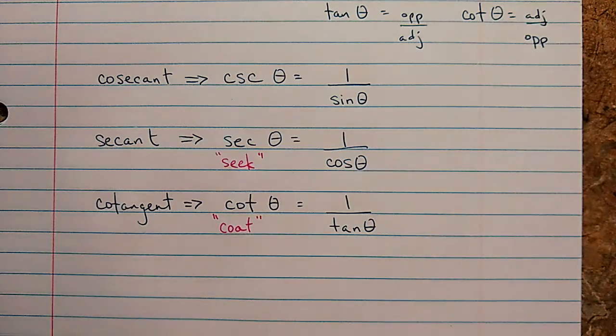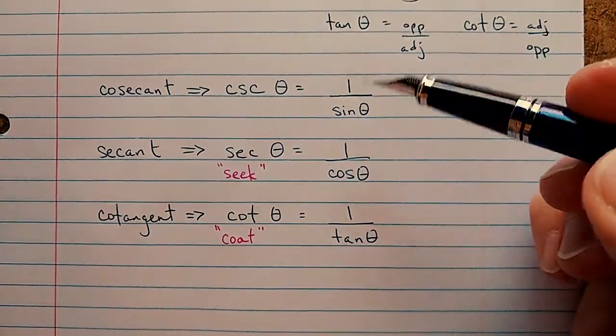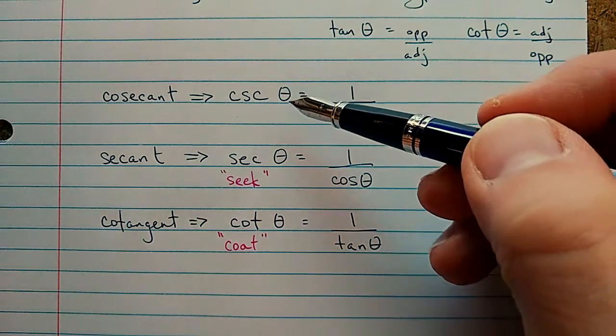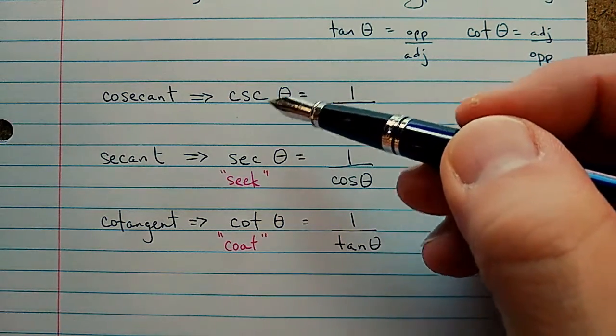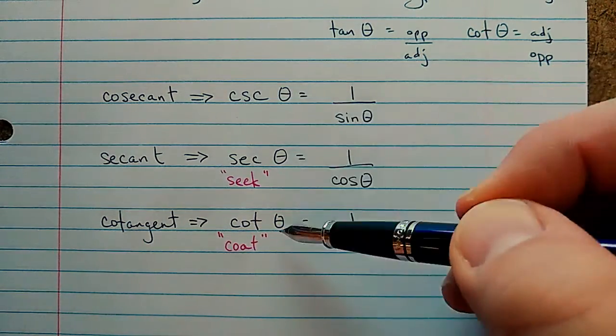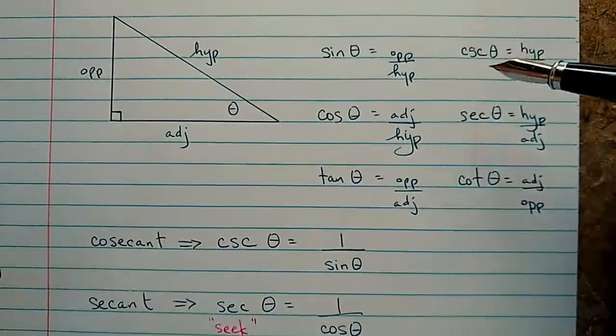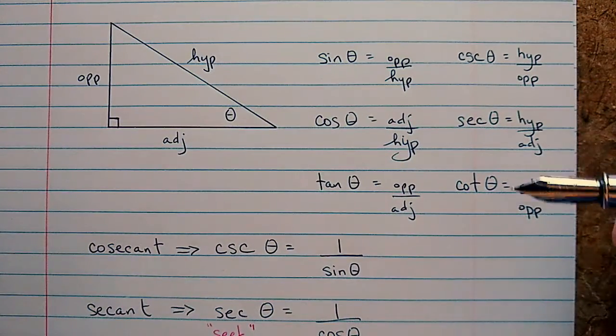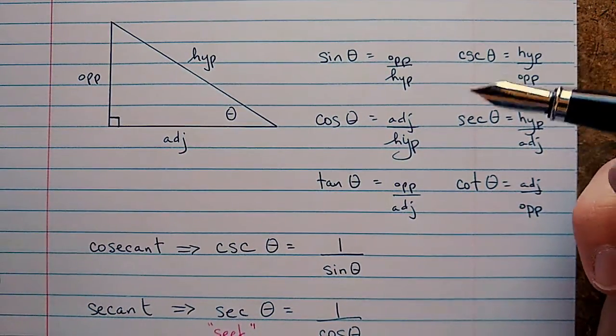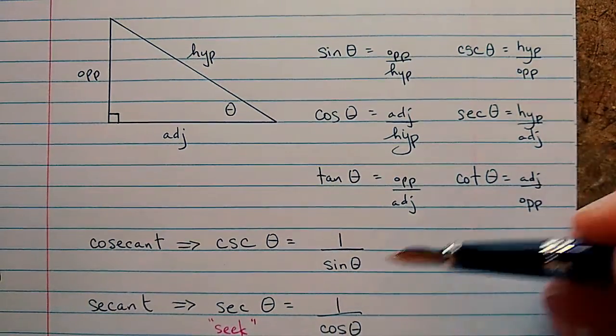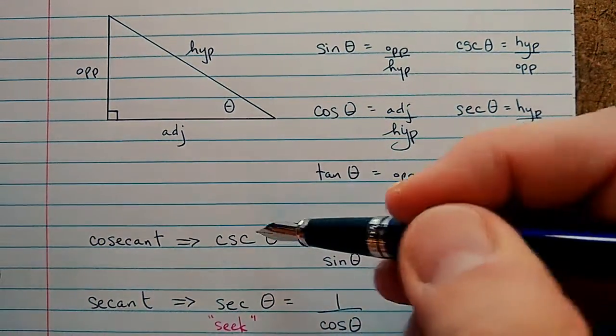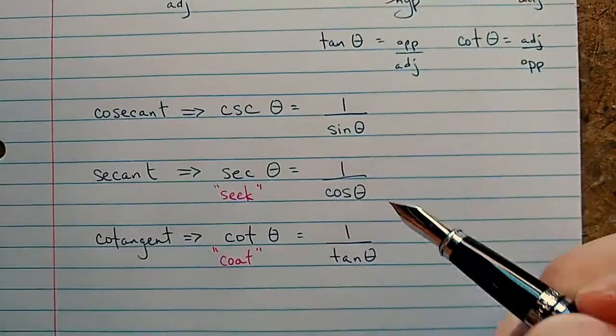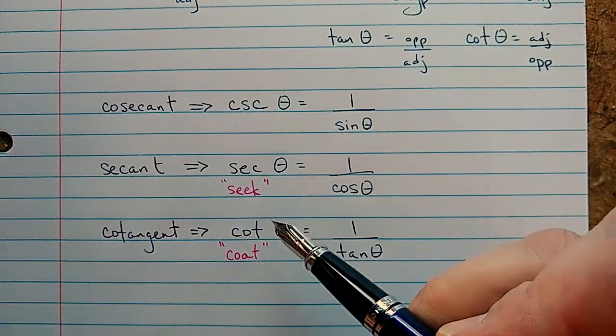So the reason we have these is that for some problems, it's easier to express the problem that we have or the relationships using one of these three ratios instead of one of these three. And the other one that's really common is if you have a formula with one over sine in it, instead they'll use cosecant. So there are some relationships that are nicer to write in this way.